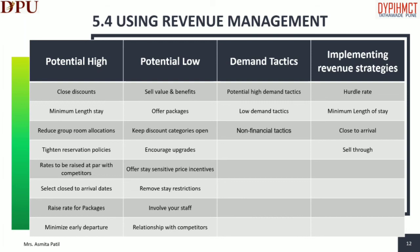While implementing revenue strategies, you have to offer minimum length of stay, close to arrival, hurdle rate and sell-up. The hurdle rate is the lowest rate set by the front office manager for a given day based upon anticipated demand. Rack rates are always available regardless of demand. Rates that fall below this minimum will not be accepted. This is sometimes called the hurdle rate.